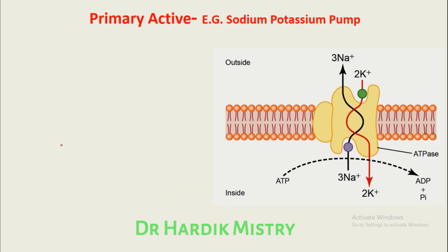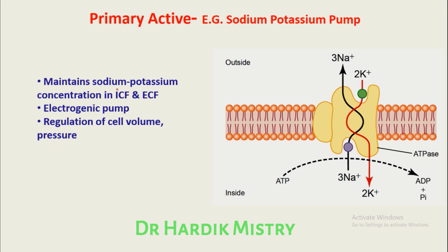The sodium-potassium pump is the most important example of primary active transport. It maintains sodium and potassium concentrations in the intracellular and extracellular fluid, is also known as an electrogenic pump, and helps in the regulation of cell volume and pressure. The sodium-potassium pump pumps three sodium ions outside of the cell membrane and two potassium ions inside the cell membrane.